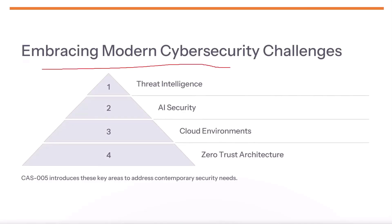Embracing modern cybersecurity challenges — this section provides an overview of the key topics covered in CAS005. The four main areas are threat intelligence, AI security, cloud environments, and zero-trust architecture. These are critical areas for addressing contemporary security needs in organizations, and we'll dive deeper into each of these topics over the course of the presentation.